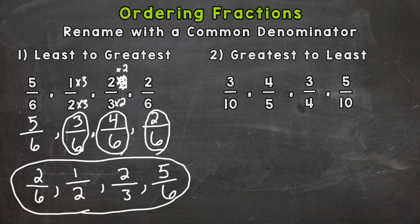So here we have 3 tenths, 4 fifths, 3 fourths, and 5 tenths. So we need a common denominator for all four of those fractions. So we have a 10, 5, 4, and 10. Any idea what the common denominator is for those fractions? Hopefully you're thinking 20.